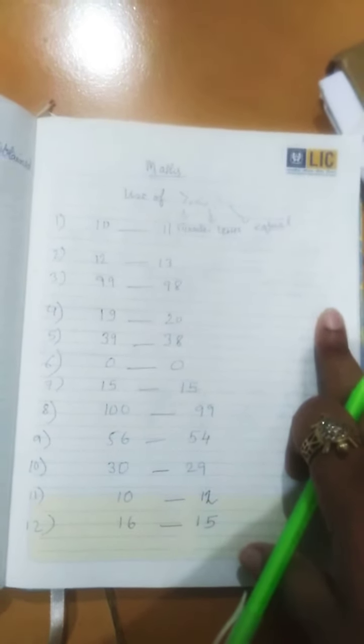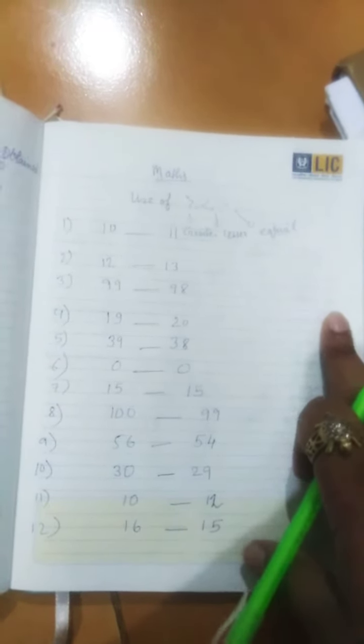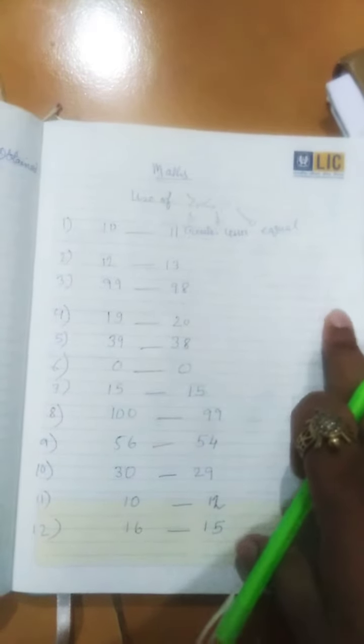the topics: missing numbers, number names, what comes before and after, and place value. Today we will do greater than, less than, and equal to signs. We all know what is greater than, equal to, and less than, isn't it?